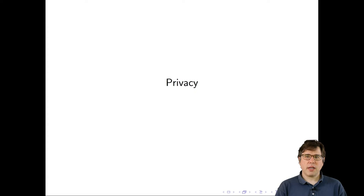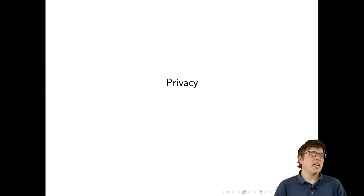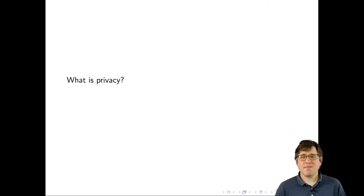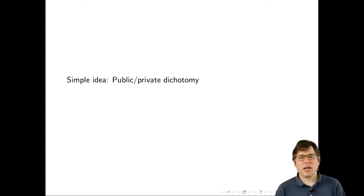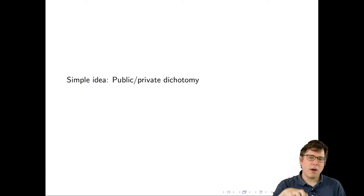The third area of difficulty is privacy — and this is one I've struggled with as well. When I started to write Bit by Bit, I thought I'd just look up the definition of privacy, and it turns out there is no definition — it's an incredibly complicated, complex topic. The simple idea that many researchers have is a public-private dichotomy: if something is public, we can use it and do what we want with it; if it's private, it has to be protected.